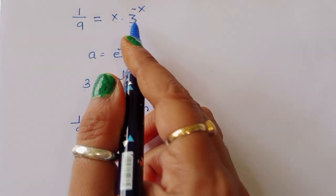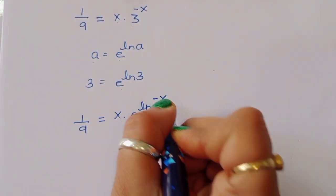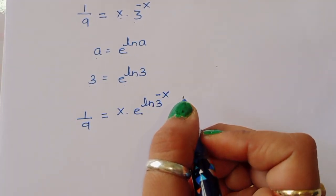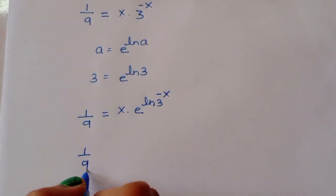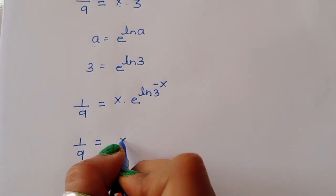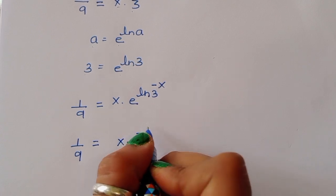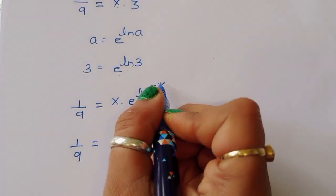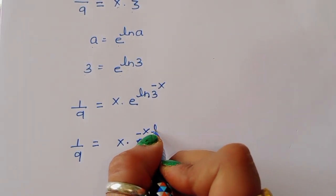Therefore 1/9 = x times e^(minus x ln3), since we can write 3^(-x) as e^(-x·ln3).